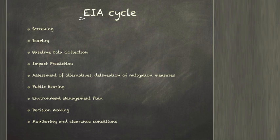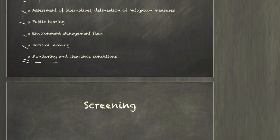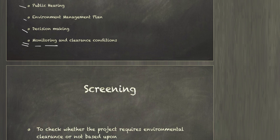We need to understand the EIA cycle — the things we go through when conducting environment impact assessment. The steps are: screening, scoping, baseline data collection, impact prediction, assessment of alternatives, delineation of mitigation measures, public hearing, and an environment management plan. After deciding to proceed, we also need to monitor environmental conditions during and after construction.